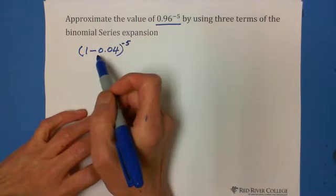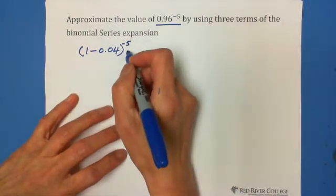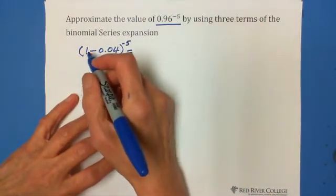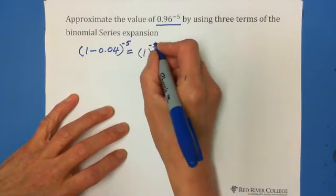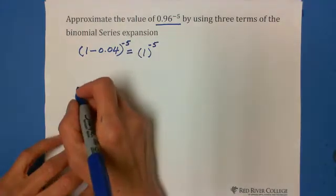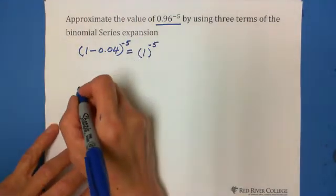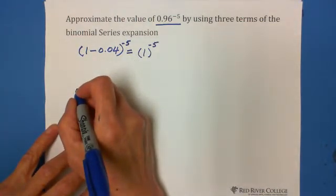As we know, the first term of binomial theorem is, first term, 1 to the negative 5 exponent. So we can write down the formula, let's say, a plus b to the n exponent.